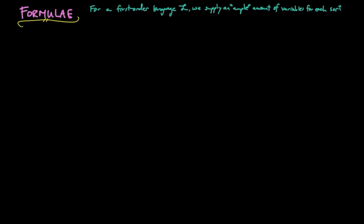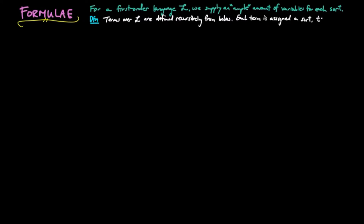We now give the symbols discussed so far in our language a syntactical structure so that we may form meaningful strings of symbols. Terms will act like nouns or noun phrases in our language. Terms over L are defined recursively from the clauses below. Moreover, each term is assigned a sort, and we write that term T has sort A by a colon relation.